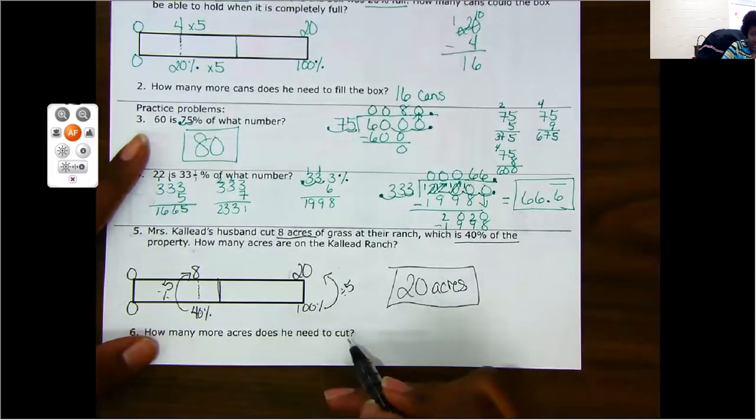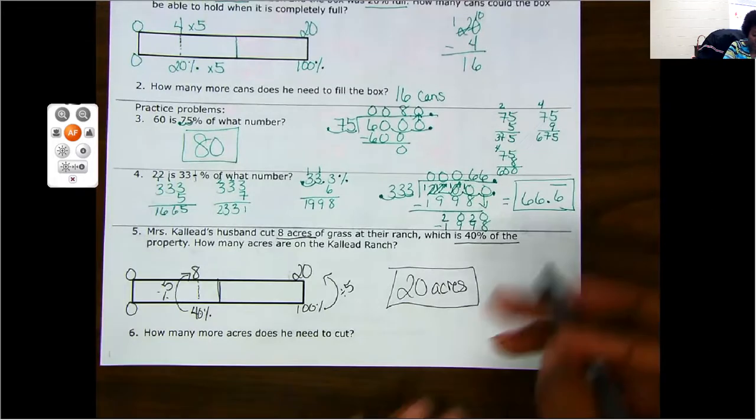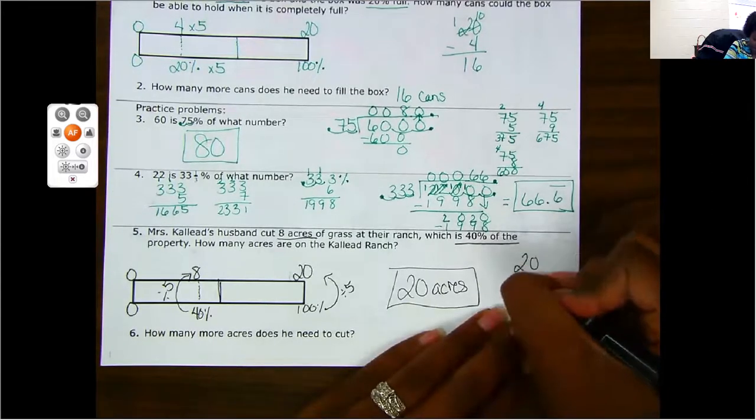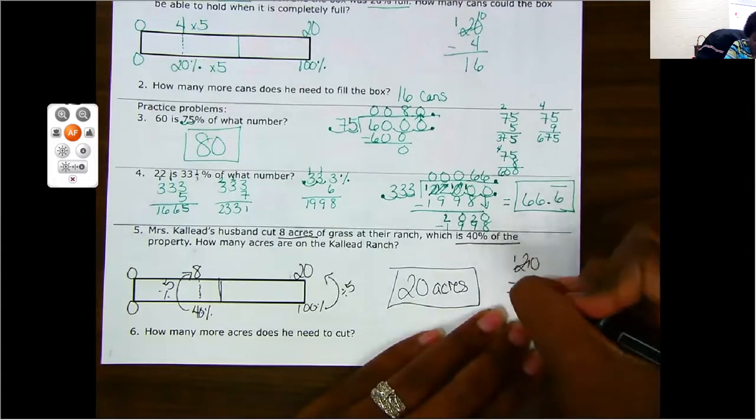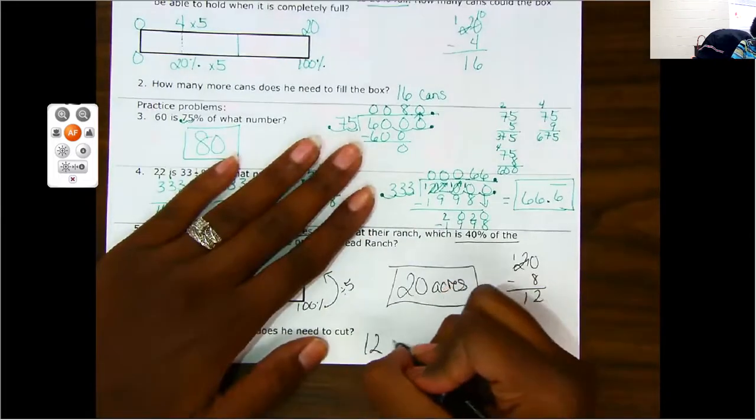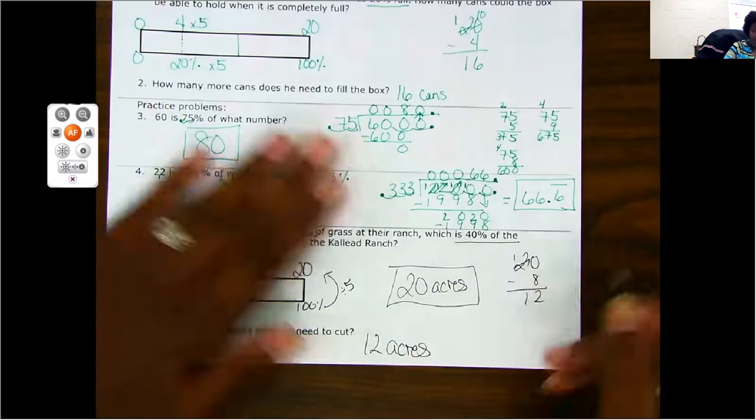How many more does he need to cut? So I need to subtract 20 from 8. 8, 9, 10, 11. He still needs to cut 12 more acres.